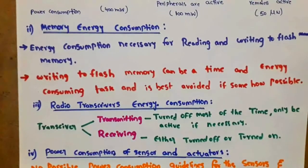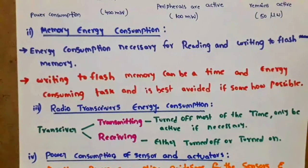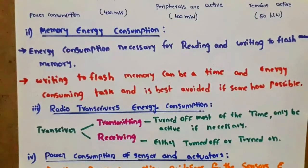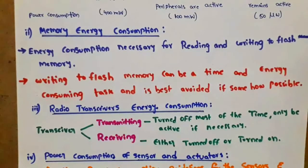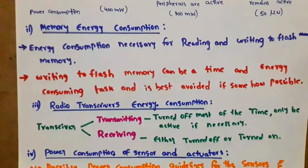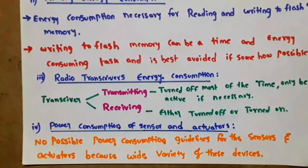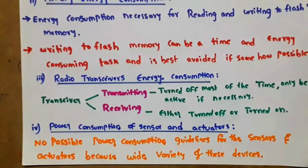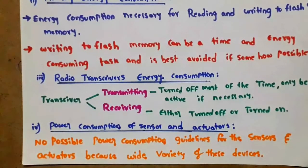Radio transceivers' energy consumption involves transmit and receive operations. Transmitting is turned off most of the time, only being turned on when receiving or transmitting. For power consumption of sensors and actuators, there are no specific guidelines because of the wide variety of these devices.